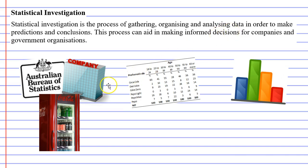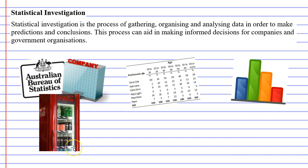An example of why we do this would be things such as companies or government organisations. They want to gather data to make good informed decisions. A company might want to know what drinks to stock on their shelves — which drink is the most popular, which one needs to take up the most space on the shelf, and which drinks are not so popular as well.